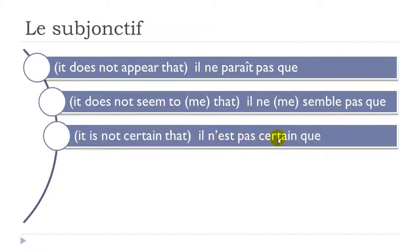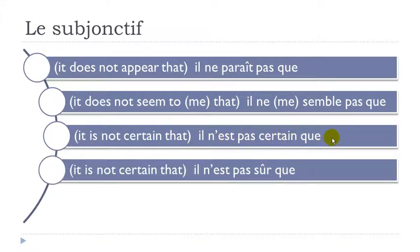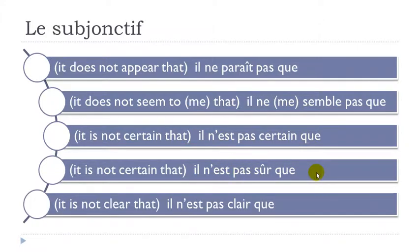Il n'est pas certain que. Il n'est pas sûr que. Il n'est pas clair que. To summarize: Il ne paraît pas que, il ne me semble pas que, il n'est pas certain que, il n'est pas sûr que, il n'est pas clair que — all should be followed by le subjonctif.